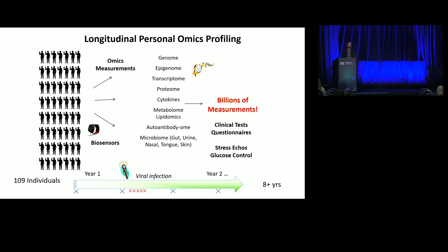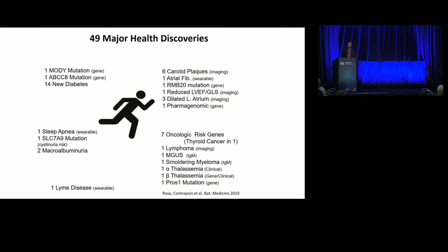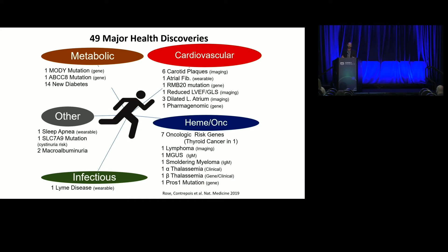We've been following a group of people for about eight and a half years. Just from the first three-plus years of profiling 109 people, we actually found 49 major health discoveries. Some were a big deal: we caught someone with early lymphoma, several people with precancers — MGUS and smoldering myeloma — and people with serious heart and metabolic issues. These advanced technologies have turned out to be quite powerful, and we've actually spun off companies from this work.